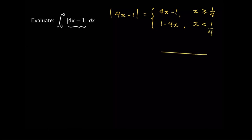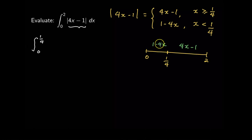Looking at the interval from 0 to 2, the value 1/4 is where the absolute value changes its sign. So from 0 to 1/4, the value is 1 minus 4x, and when x is greater than or equal to 1/4, it is 4x minus 1. Therefore, we split our integral into: from 0 to 1/4 of (1 minus 4x) plus from 1/4 to 2.